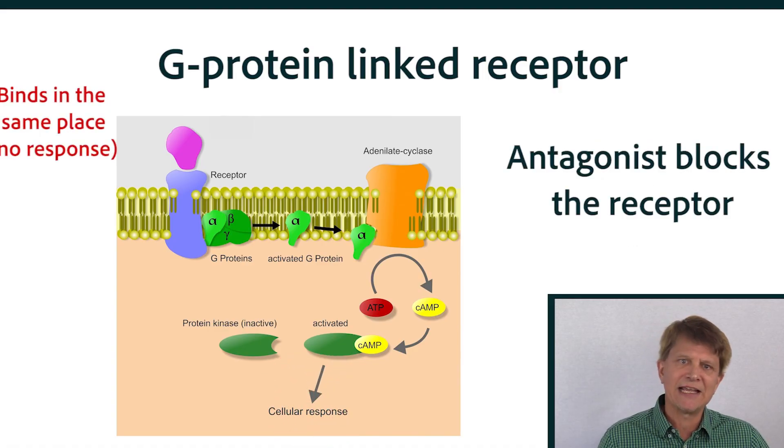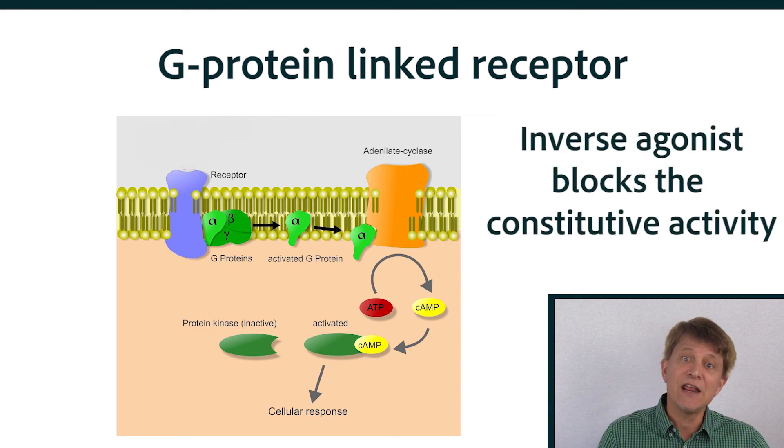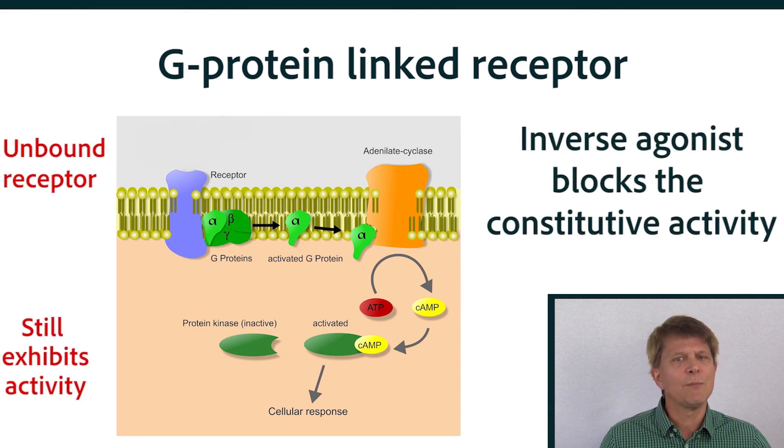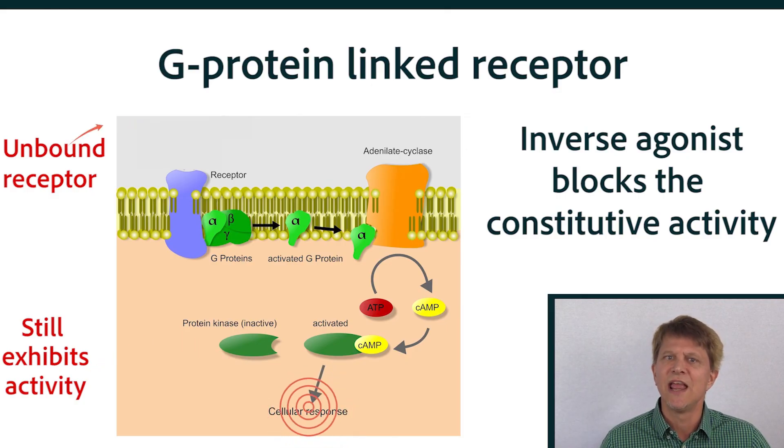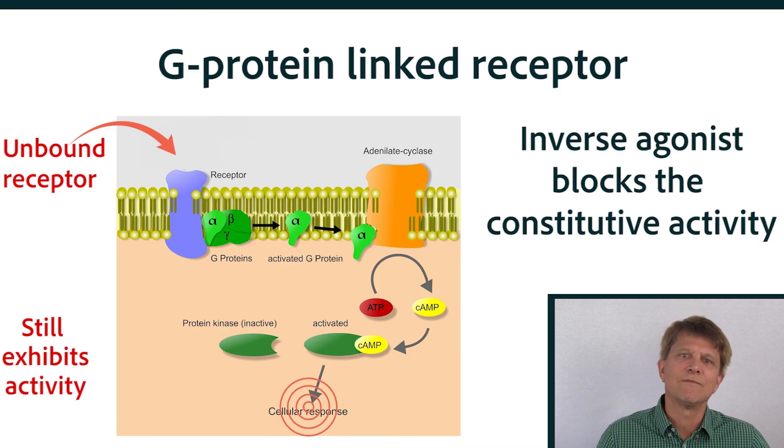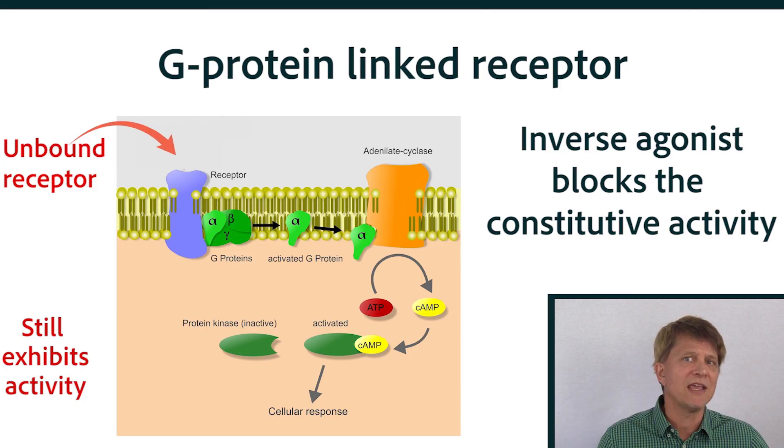An antagonist blocks the receptor, preventing the natural ligand from binding and preventing the cellular response that would occur with ligand binding. An inverse agonist would only be possible if the particular receptor exhibits constitutive activity. In other words, if that receptor is involved in some cellular response simply by being on the cell surface.